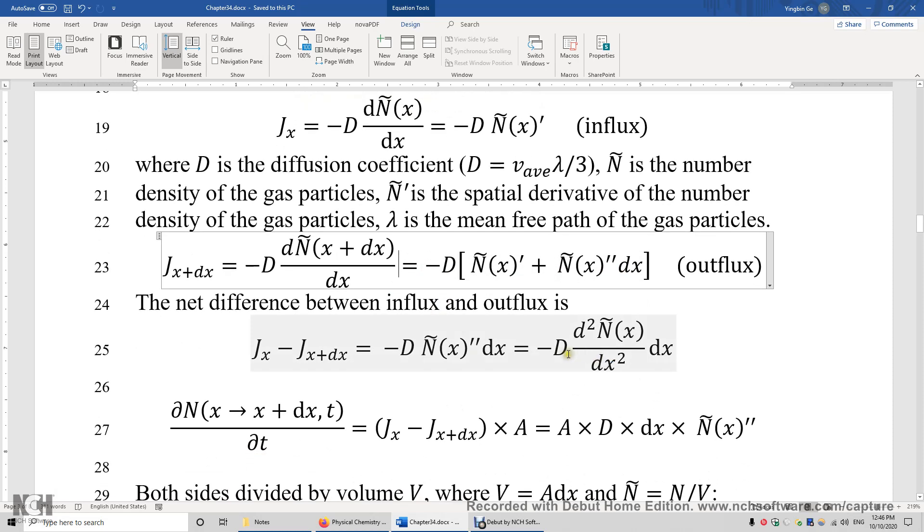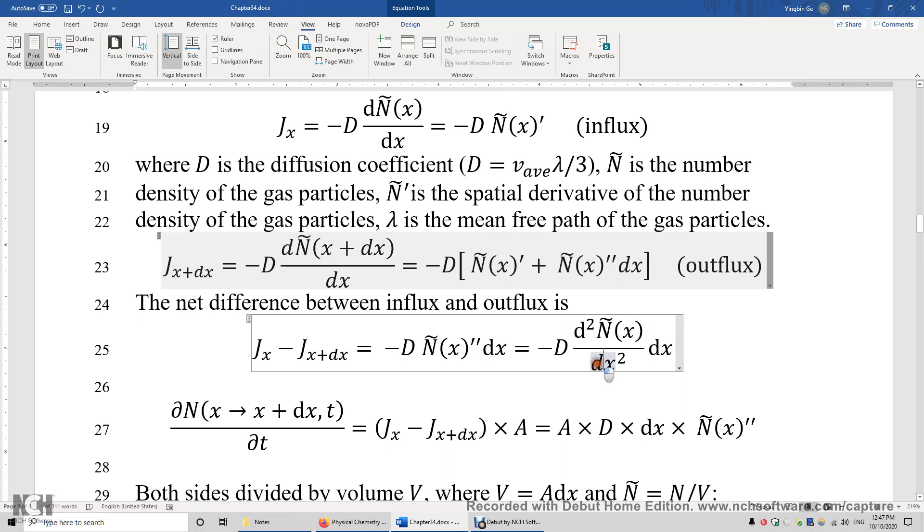The result is negative D times the second derivative of density, times dx. So again, over here, this is the second derivative of the number density of the gas particles. Maybe I should use the regular font for this exact differential here.